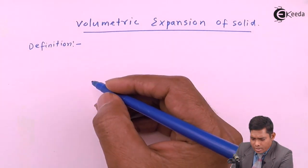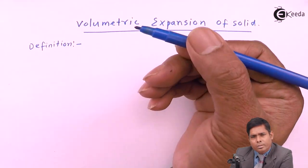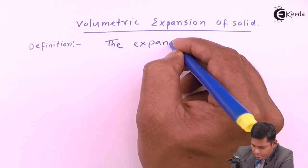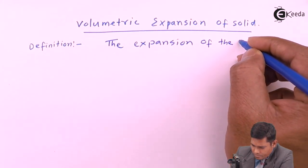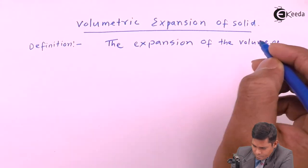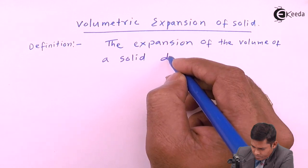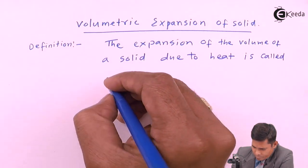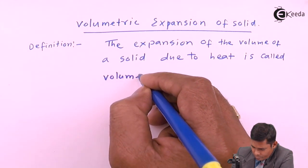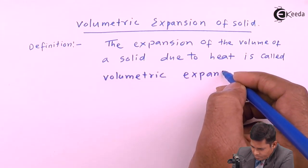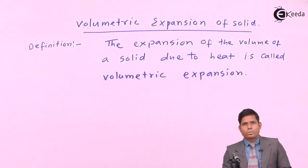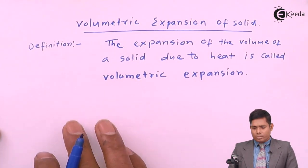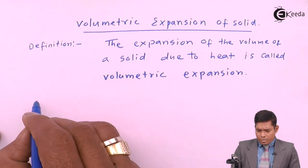The definition of volumetric expansion is the expansion of the volume of the solid. This is the definition of volumetric expansion. Now we move to the explanation part.